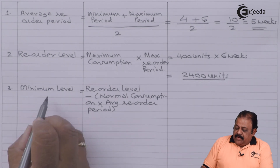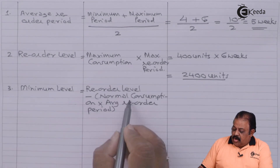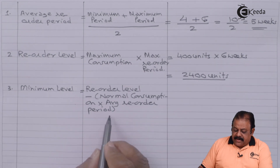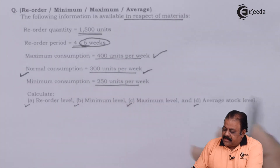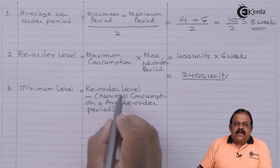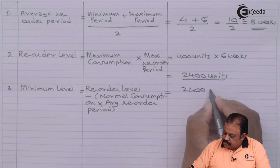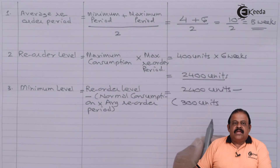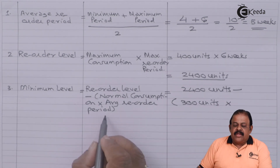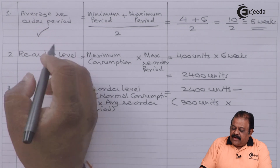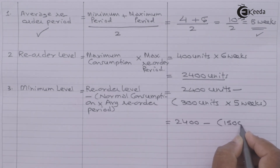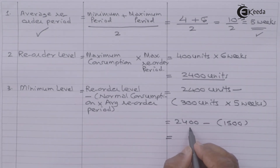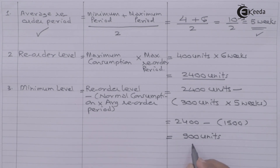Now we are required to calculate the minimum level. The formula is: reorder level minus (normal consumption multiplied by average reorder period). Reorder level is 2400 units. Normal consumption is 300 units multiplied by the average reorder period of five weeks — that is 1500. So minimum level equals 2400 minus 1500, which is 900 units.